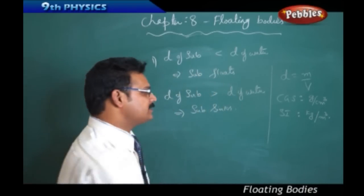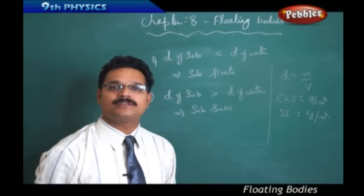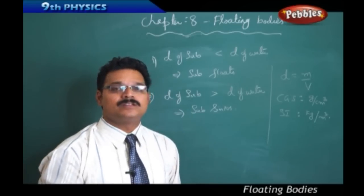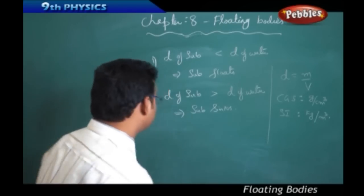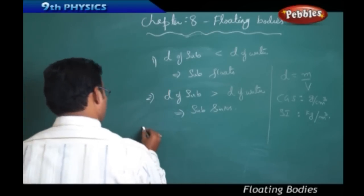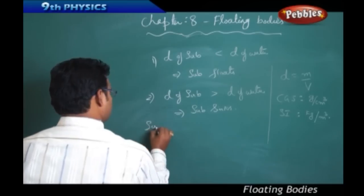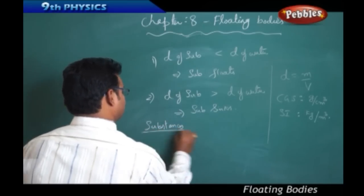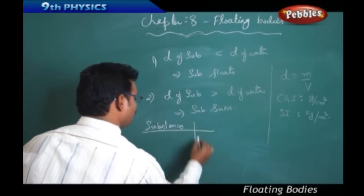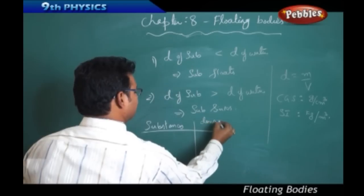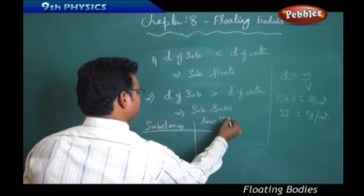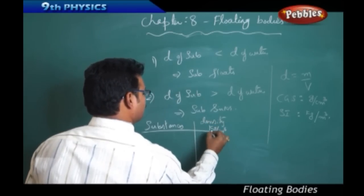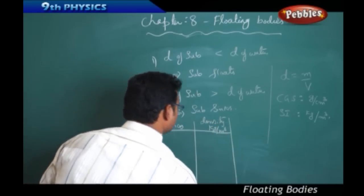Those are the CGS and SI units of density. Now let me write the densities of some substances — listing substances and their density in kilograms per cubic meter.